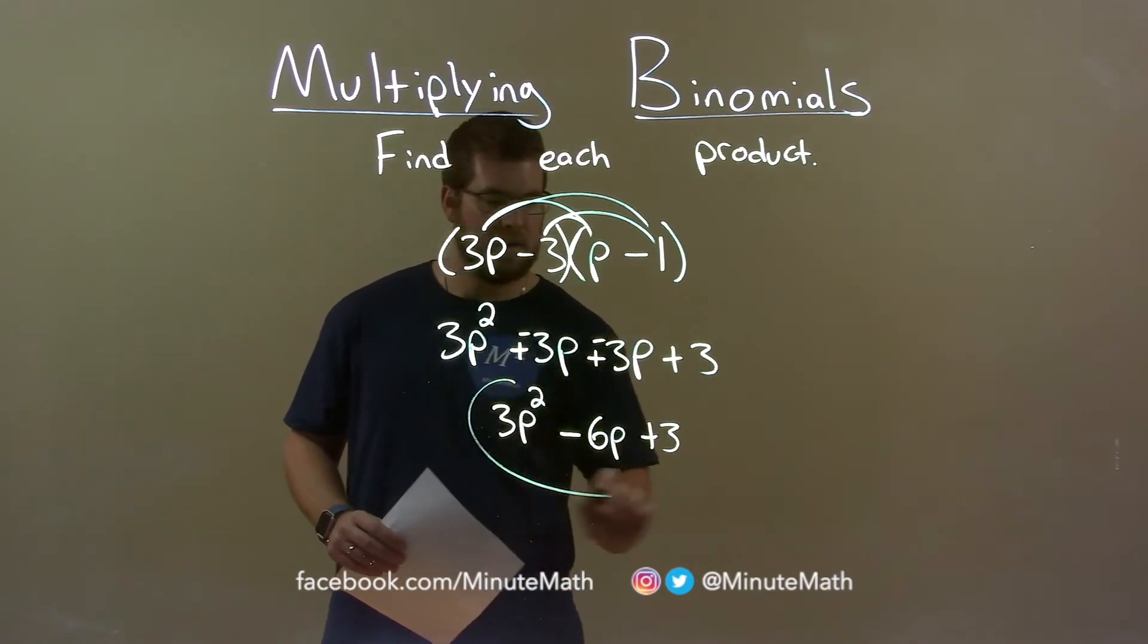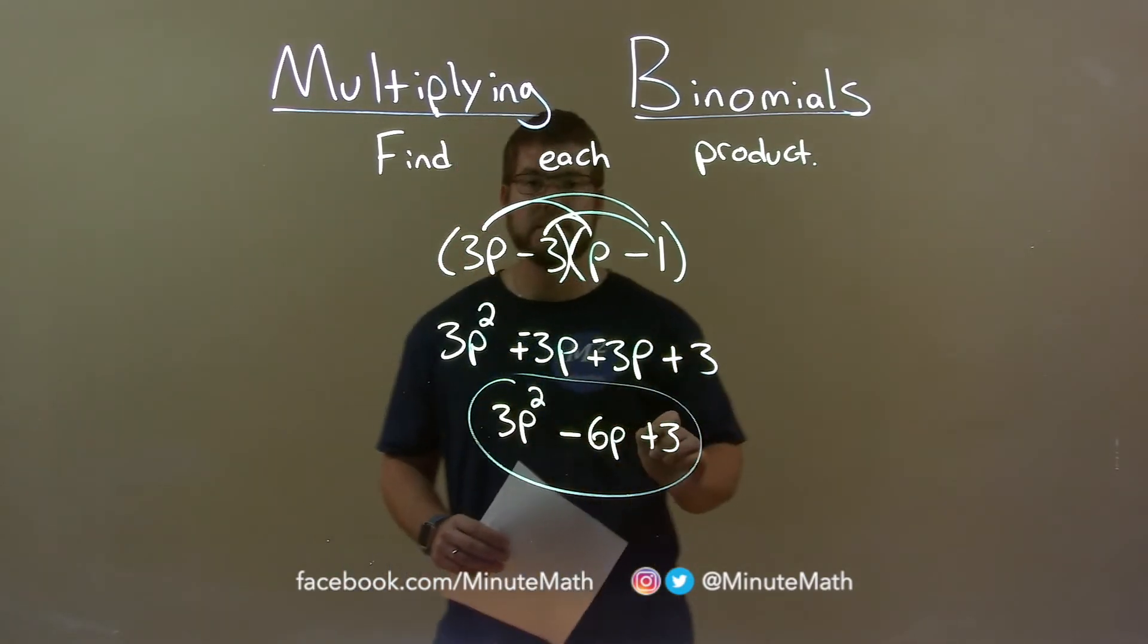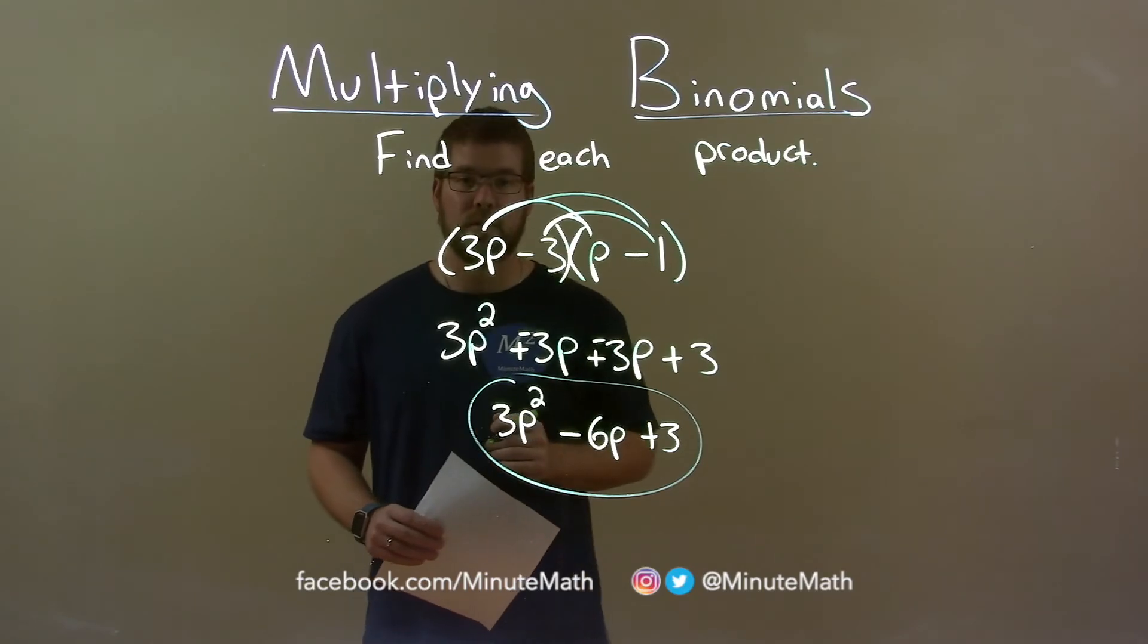And so now our final answer is 3p squared minus 6p plus 3.